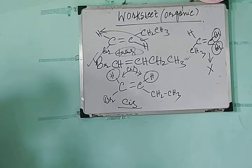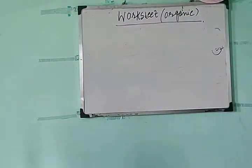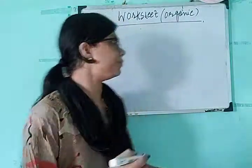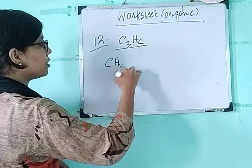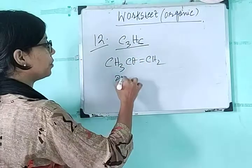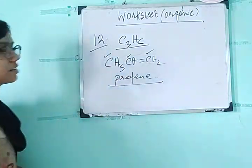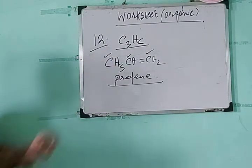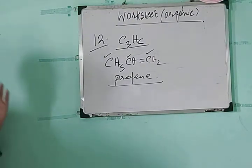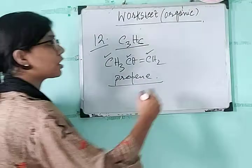The next question asks what type of isomerism is shown by compounds with the molecular formula C₃H₆. The linear open-chain form is CH₃CH=CH₂, which is propene. This gives C₃ and 3+2+1 = 6 hydrogens, so C₃H₆. You also need to think about ring structures when finding all possible structures for this molecular formula.